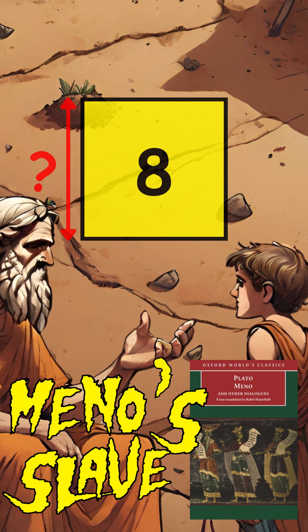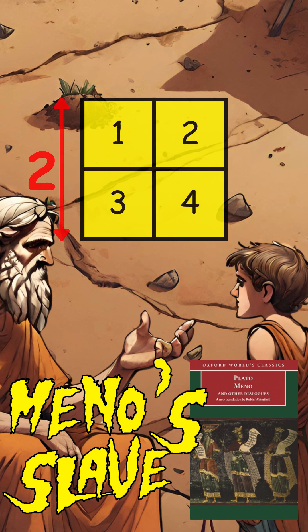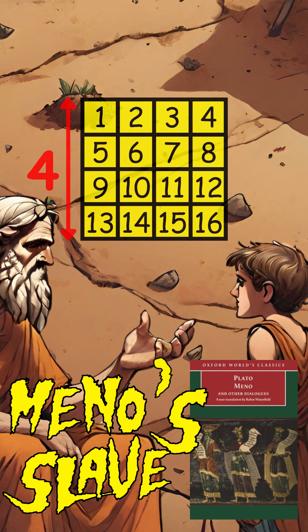The slave realizes that the length of the sides must be somewhere in between two — the original square — and four, the square with an area of 16.